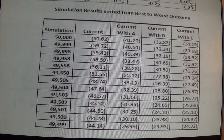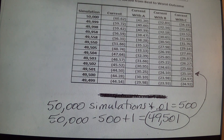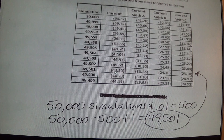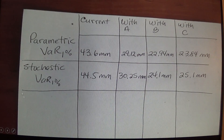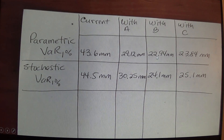First, we identify which simulation corresponds to a 1% risk tolerance. With 50,000 simulations, the 500th from the worst represents our VAR. Including the last observation requires adding one, so the VAR comes from simulation 49,501. Reading those values from the table gives stochastic VARs of $44.5 million and so on for each strategy. Comparing parametric VAR (calculated earlier) to stochastic VAR, the parametric VAR is consistently lower across all strategies — and with B and C, the difference is clearly concerning, since parametric showed B below $23 million while stochastic shows it at $24 million.